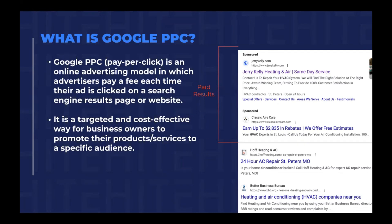First things first — what is Google PPC? If you are in the home service space, I'm sure you've heard of it before or maybe you've run your own ad campaigns. Essentially, Google Pay Per Click is an online advertising model which allows you to display your business at the top of Google. It allows users to click on your ad, see your business more frequently, and it charges you a fee each time your ad is clicked on. This is a very targeted, cost-effective approach to promote specific products, services, or target specific locations. Anytime we're seeing a sponsored post in Google search results, this is the Google AdWords side — this is the pay-per-click model.